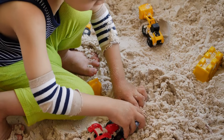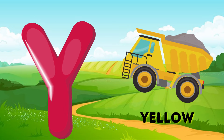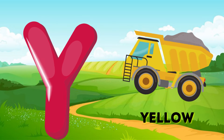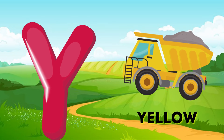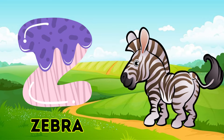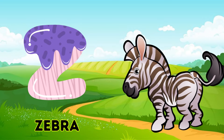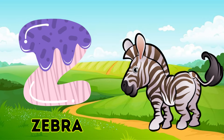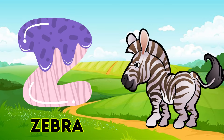Y is for yellow, y-y-yellow. Z is for zebra, z-z-zebra.